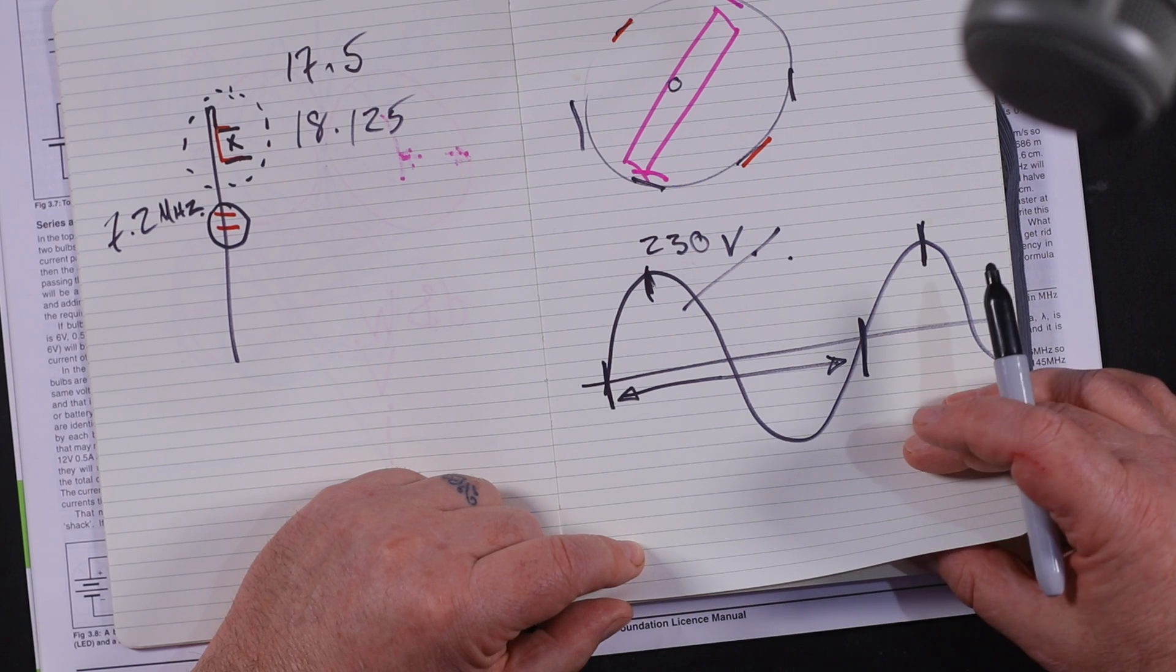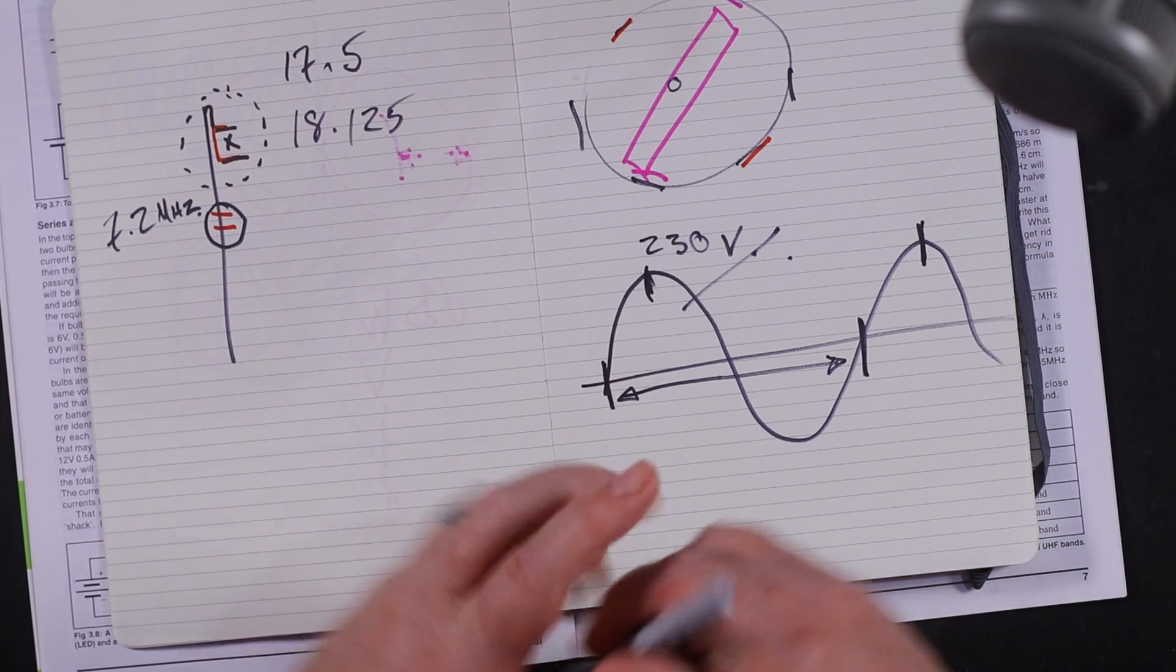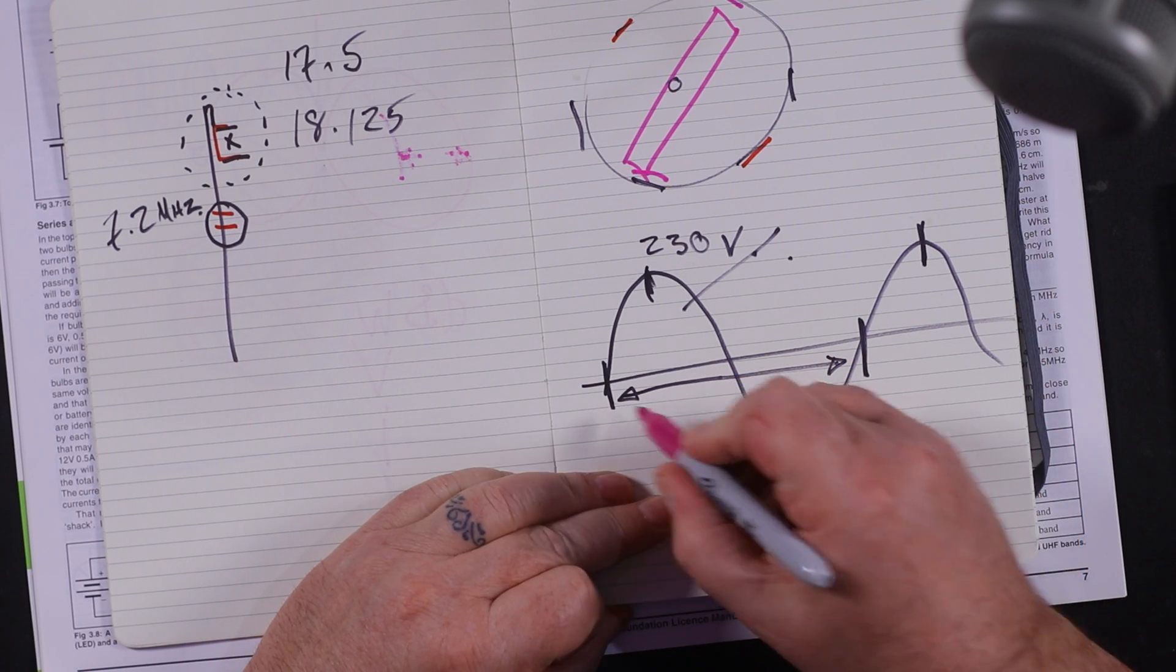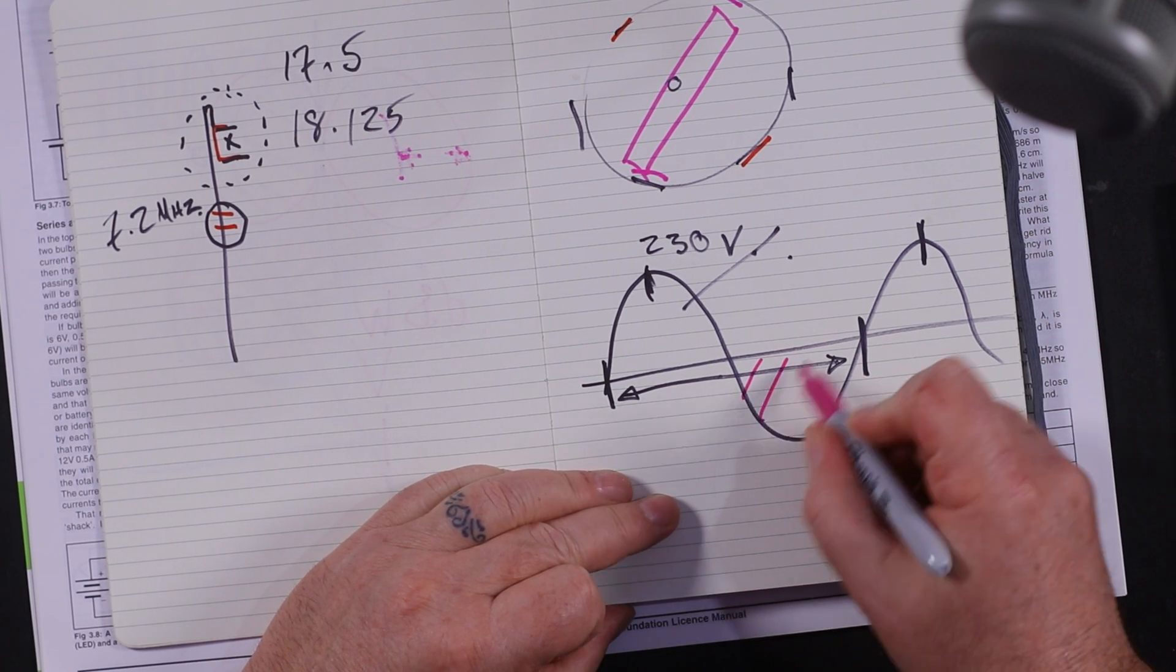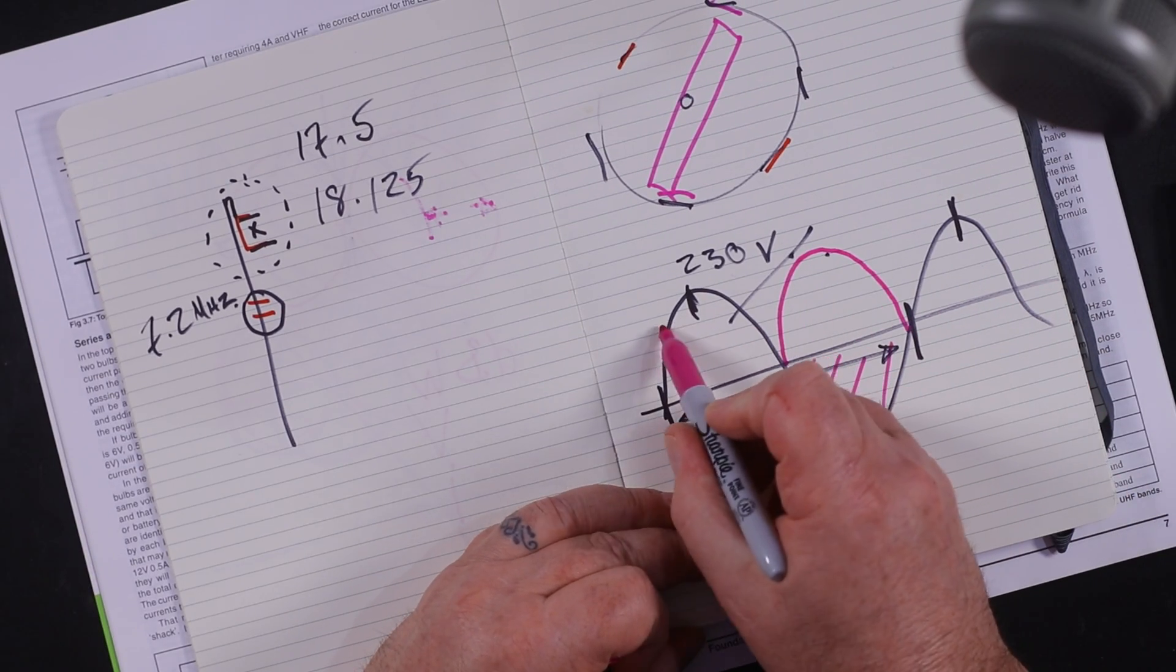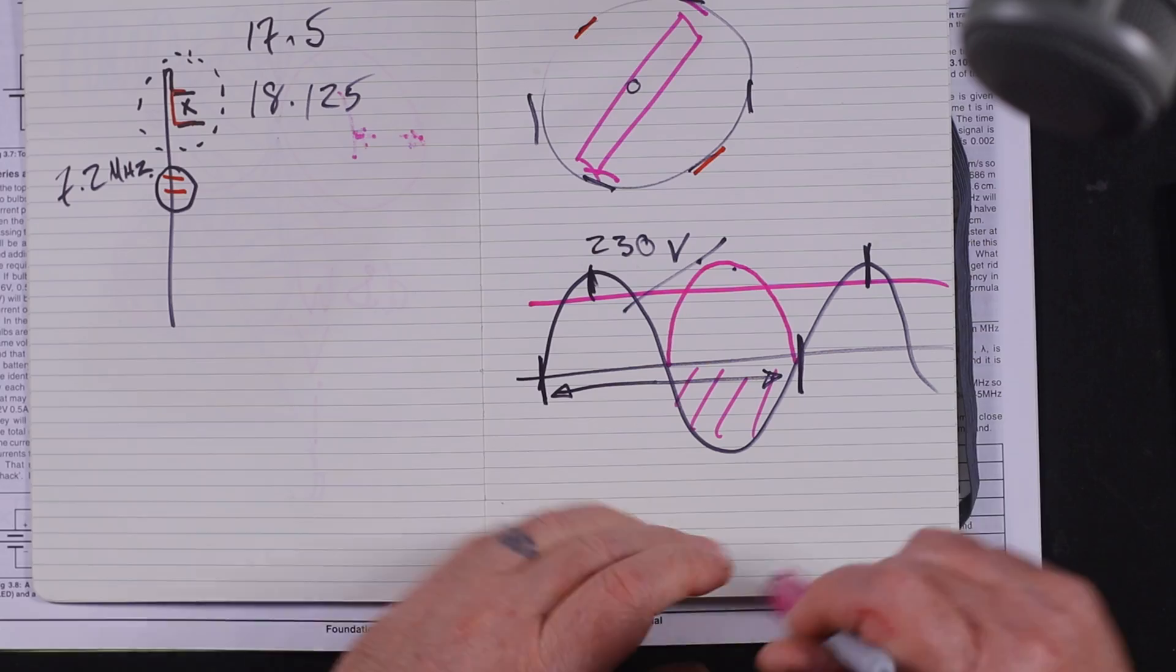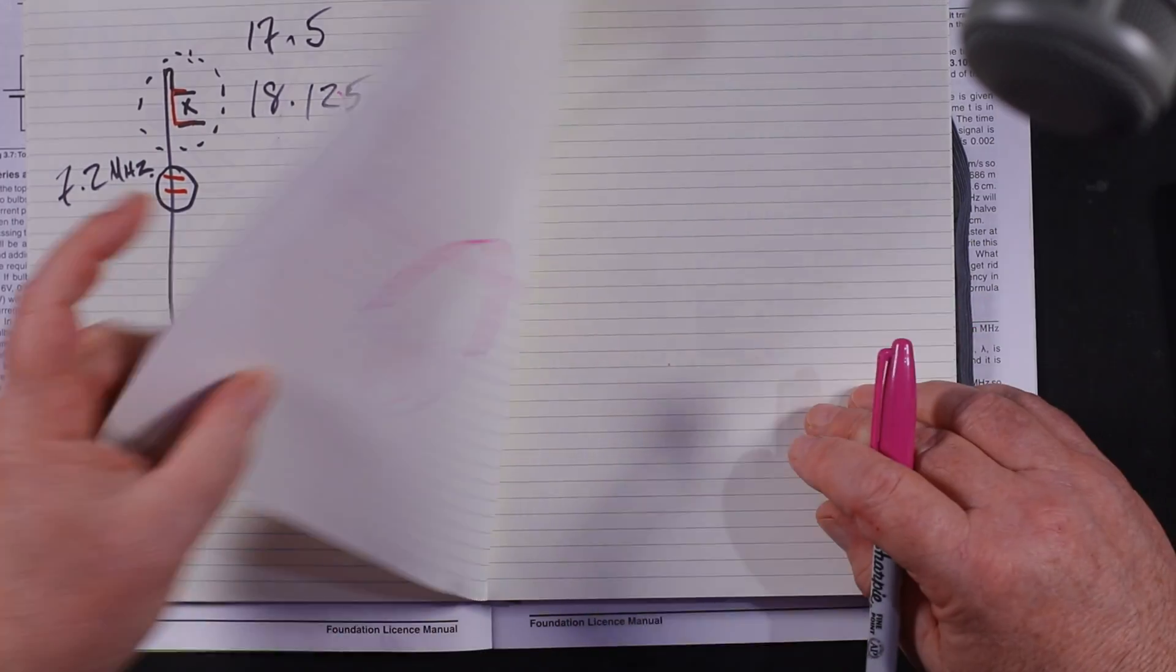Although it's not in the syllabus, we can make this into a rectified circuit where we can flip this bit here the other way up, and then we use something called a smoothing circuit and we can end up with DC. But that's not in the syllabus, it's just interesting.